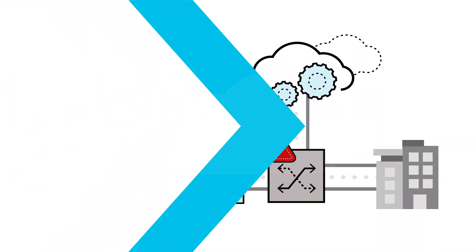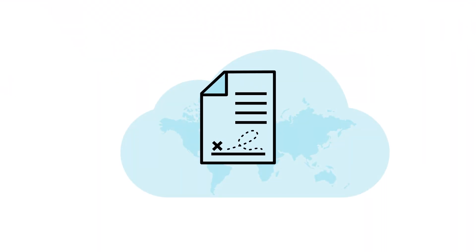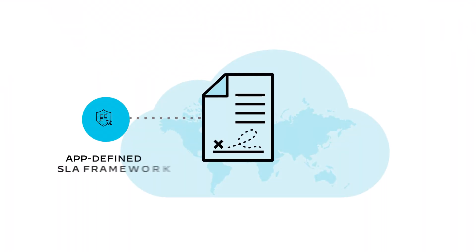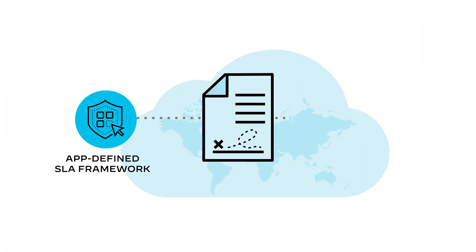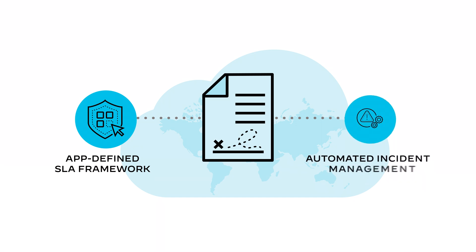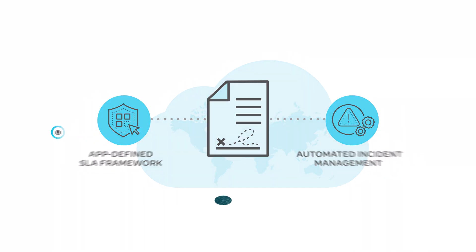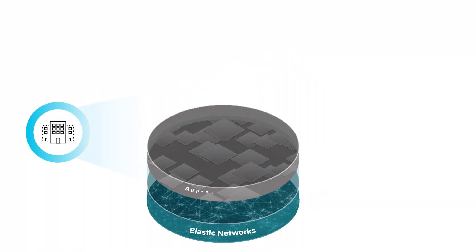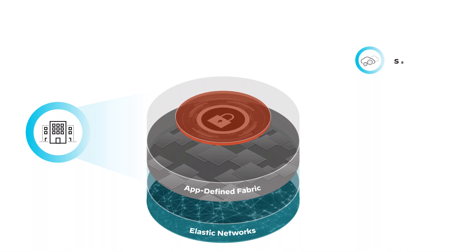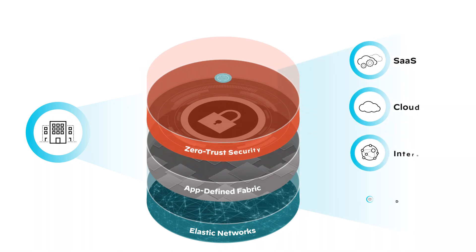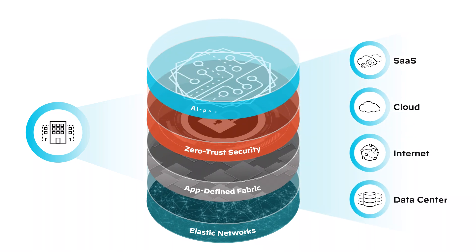What modern organizations need is an app-defined SLA framework and automated incident management to provide intelligent traffic engineering and application SLA assurance for all applications.